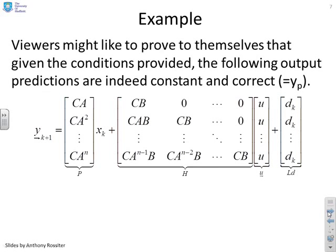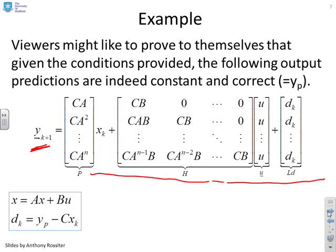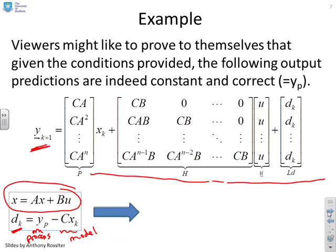You might like to prove that this works. Here's a prediction for all future values of Y based on the state-space model, covered in an earlier video. If you assume X is at a value such that X equals AX plus BU, and you use the disturbance estimate D equals YP minus CXK (actual process output minus model state), then you can prove that the future predictions ensure Y_future equals YP, YP, YP, and so on. You should find this relatively easy to prove.